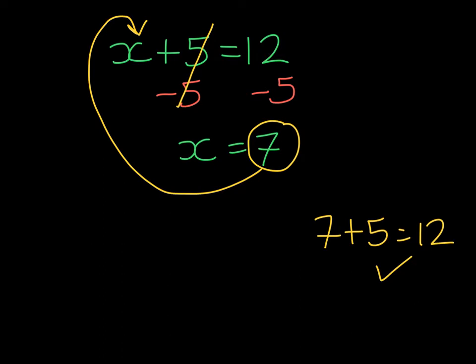Now, if we look at the steps we've taken, we can see that the inverse operations here were to subtract 5, and I'm going to show you them in blue, right here. These were our inverse operations. Now, why are these called one-step equations? Because we've done one inverse operation to solve for our unknown.